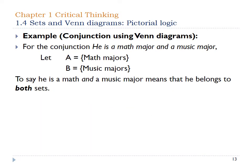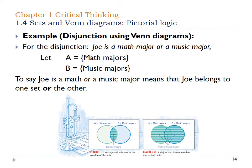Now we're going to look at conjunctions using Venn diagrams. For the conjunction 'he is a math major and a music major,' we have math majors and music majors as the two different sets. To say he's both a math major and a music major means he belongs to both sets — so in Figure 1-12 it's only the interior shaded part between the green circle and the blue circle.